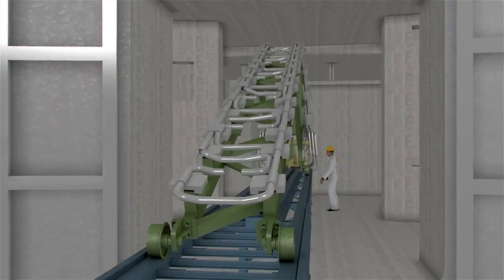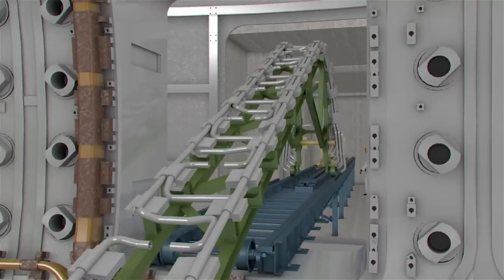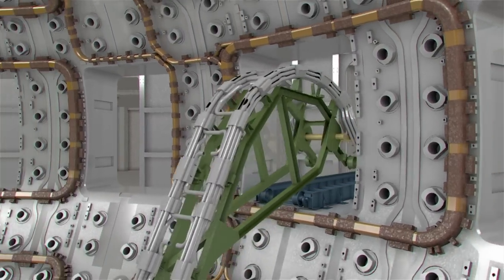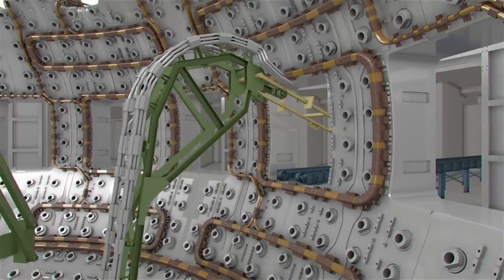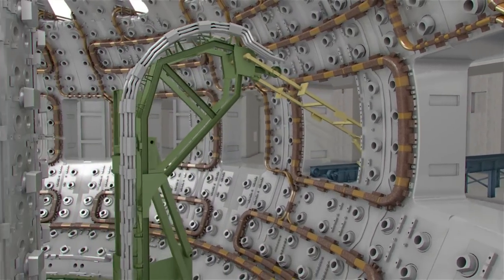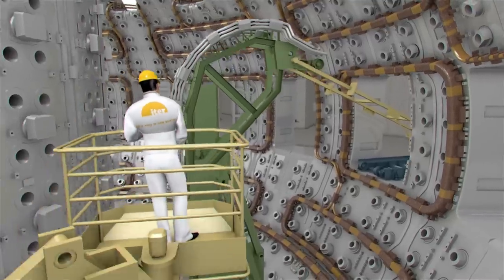Next in line are the blanket manifolds, the inlet and outlet pipe bundles that will supply the cooling water for the blanket modules. Because of their physical size measuring up to 7.5 by 3 meters and a weight of 400 up to 600 kg...